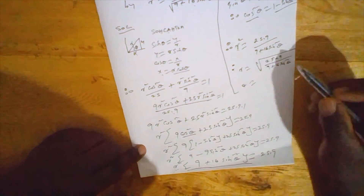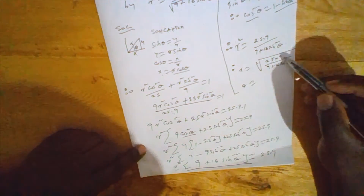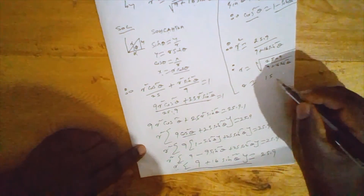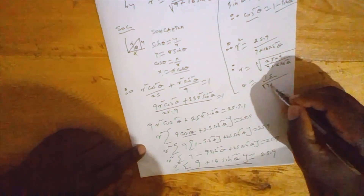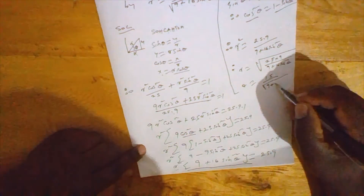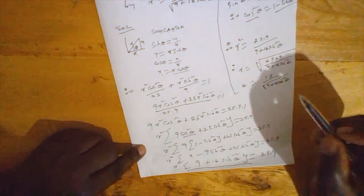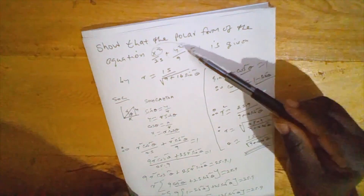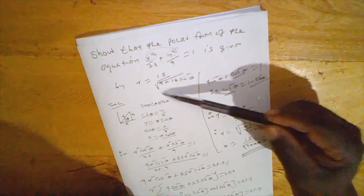Taking the square root of both sides, r equals the square root of 25 times 9 over (9 plus 16 sin squared theta). Since the square root of 25 times 9 is 5 times 3 which is 15, this gives r equals 15 over the square root of 9 plus 16 sin squared theta. We have shown that the polar form of this equation is indeed this result. Thank you for watching and listening.